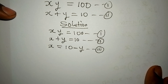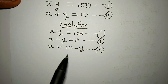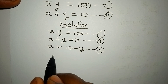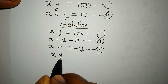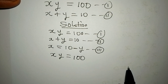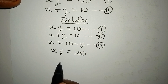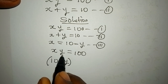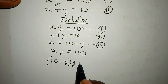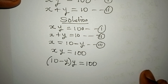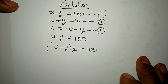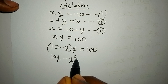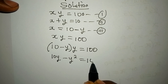The next step is to substitute the value of x from equation 3 into equation 1. Equation 1 is xy equals 100, so in place of x I write (10 minus y), giving (10 minus y)y equals 100. Opening the bracket: 10y minus y² equals 100.